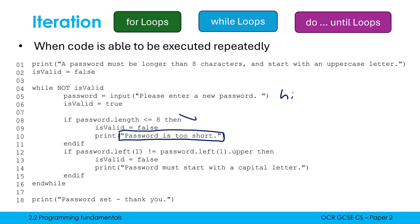If password.left(1) is not equal to password.left(1).upper. What is this saying? Well, this is saying if our far left character is not equal to the same far left character in uppercase, then it must be lowercase. So again, isValid is false, and we tell the user it must start with a capital letter.